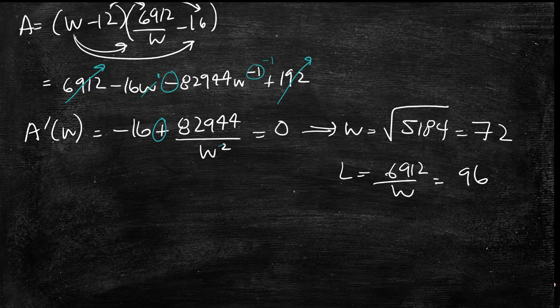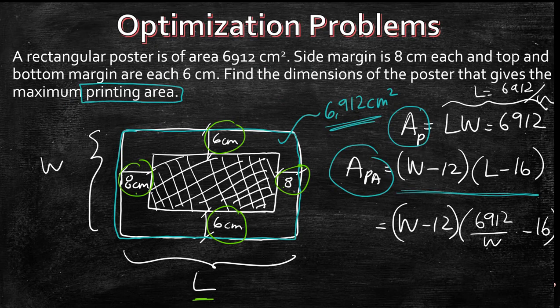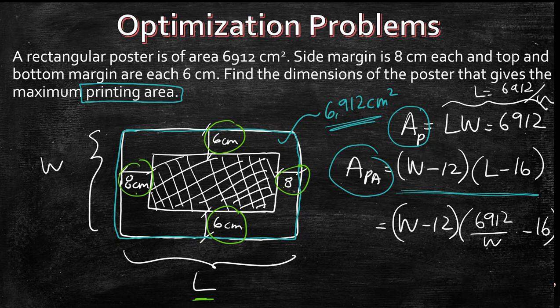It will be very easy for us to get the maximum printing area. Remember that the printing area is W minus 12 into L minus 16. So if you just plug in W and L, you're going to have your printing area. That's the easy part.